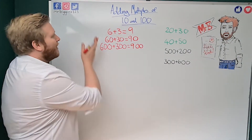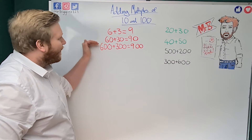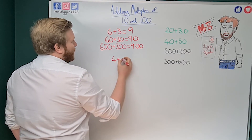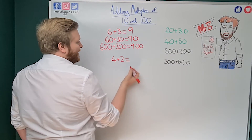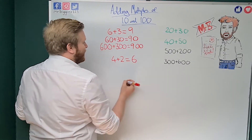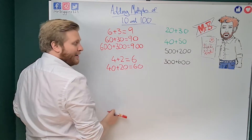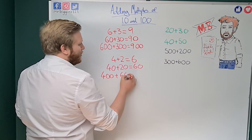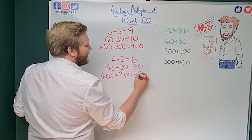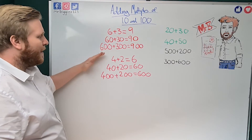There you can see that pattern — it shows us that all we actually need to know is how to add two one-digit numbers, and then we can add these multiples together. Let's look at another one: four plus two. Four plus two is easy — four, five, six — we've added two and we're at six. So 40 plus 20 is 60, and 400 plus 200 is 600.